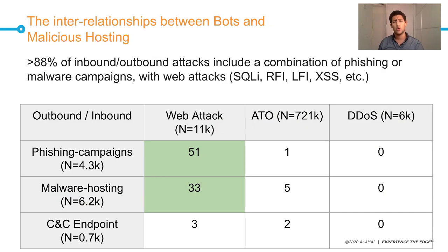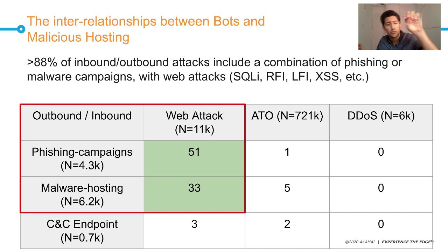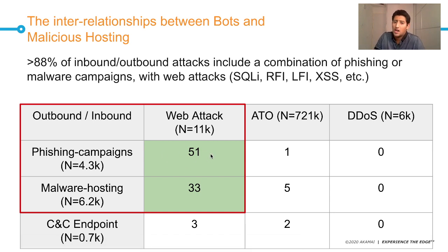If we cross the type of inbound attack with the type of outbound attack, we see the highest correlation occurs between phishing/malware and web attacks. There is virtually no chance of browsing a phishing website and being on the same machine as a DDoS operation — same for malware and DDoS. But you have a high chance of being on the same machine as SQL injection, RFI, XSS, etc. Even though we don't have a large dataset of web attacks, the highest correlation still happened there.